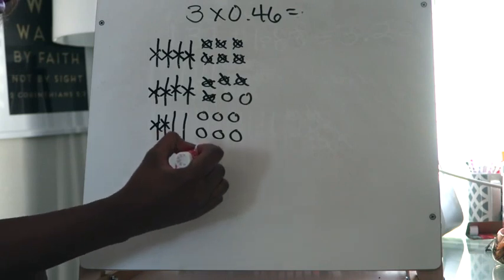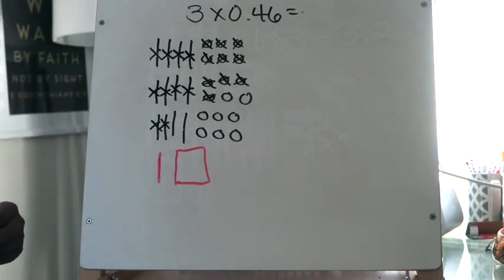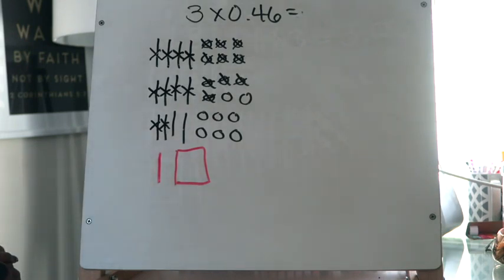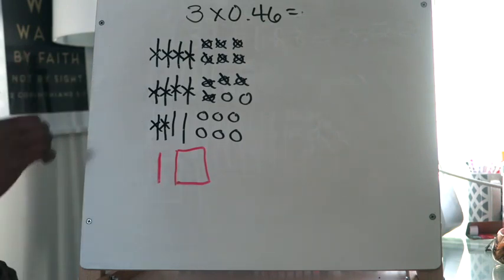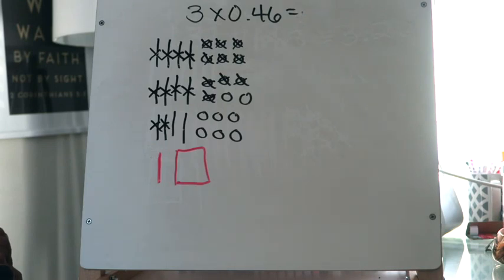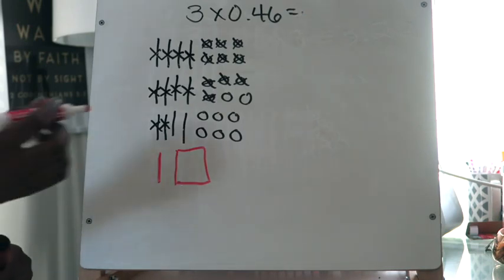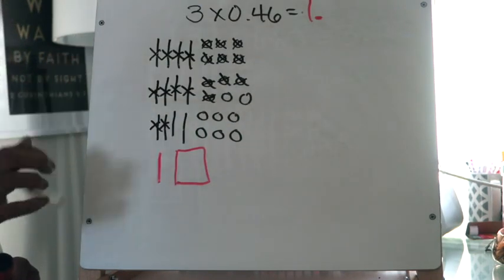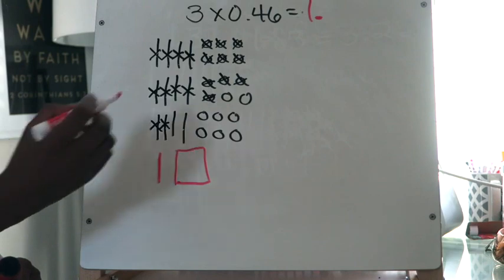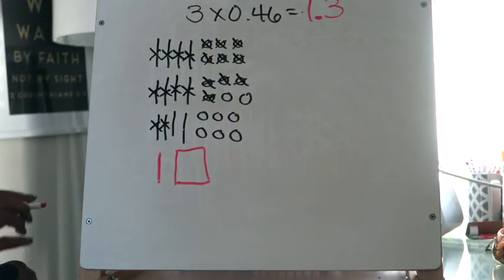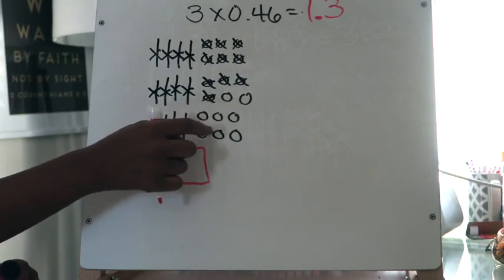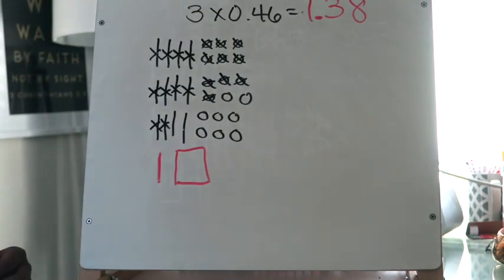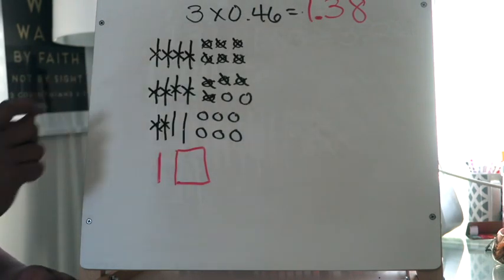Looking at what's left, I only have two tenths remaining — not enough to regroup further. So now I interpret the result: I have one whole, and counting the remaining tenths: one, two, three tenths, and counting the remaining hundredths: one through eight hundredths. So the answer to 3 times 46 hundredths is 1 and 38 hundredths, or 1.38.